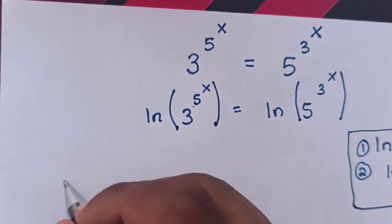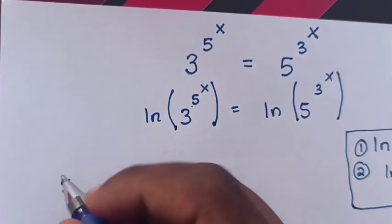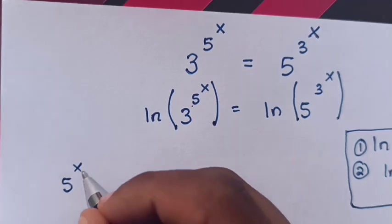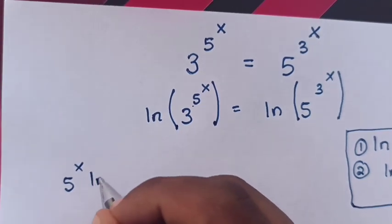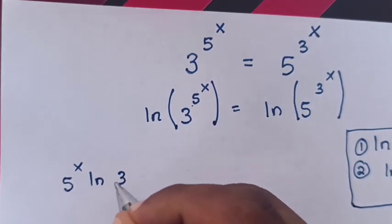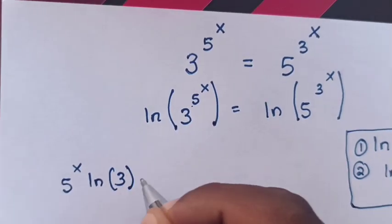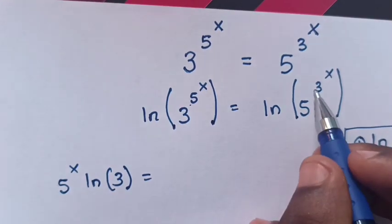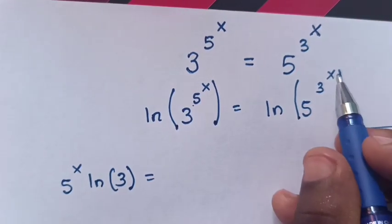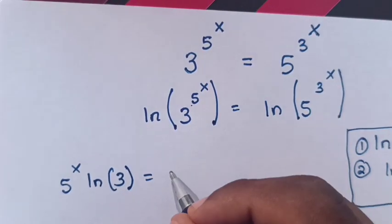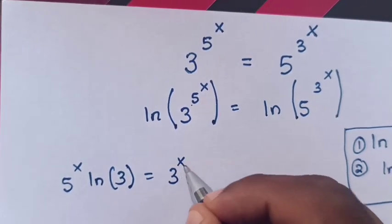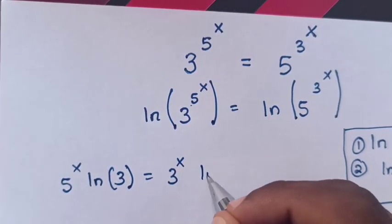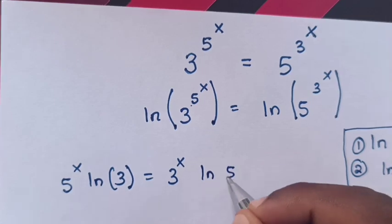So it will be 5^x · log(3) is equal to 3^x · log(5).